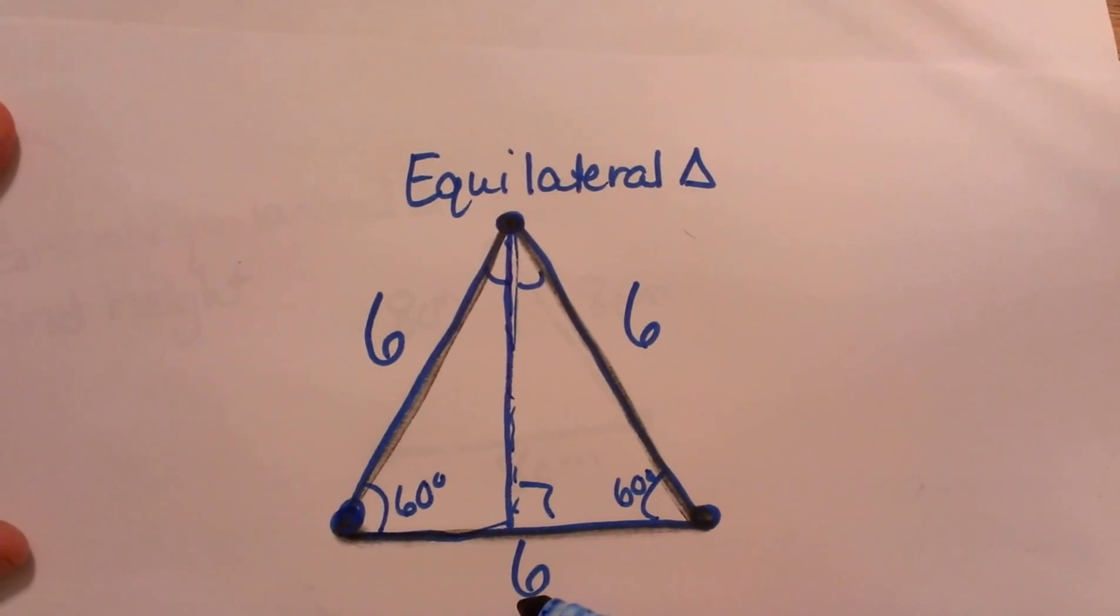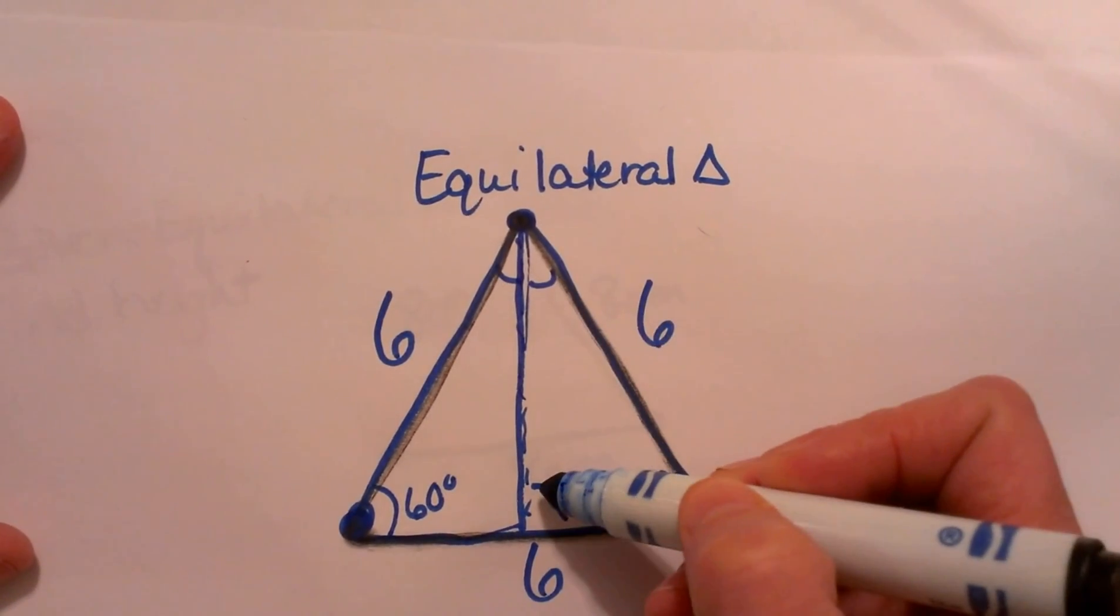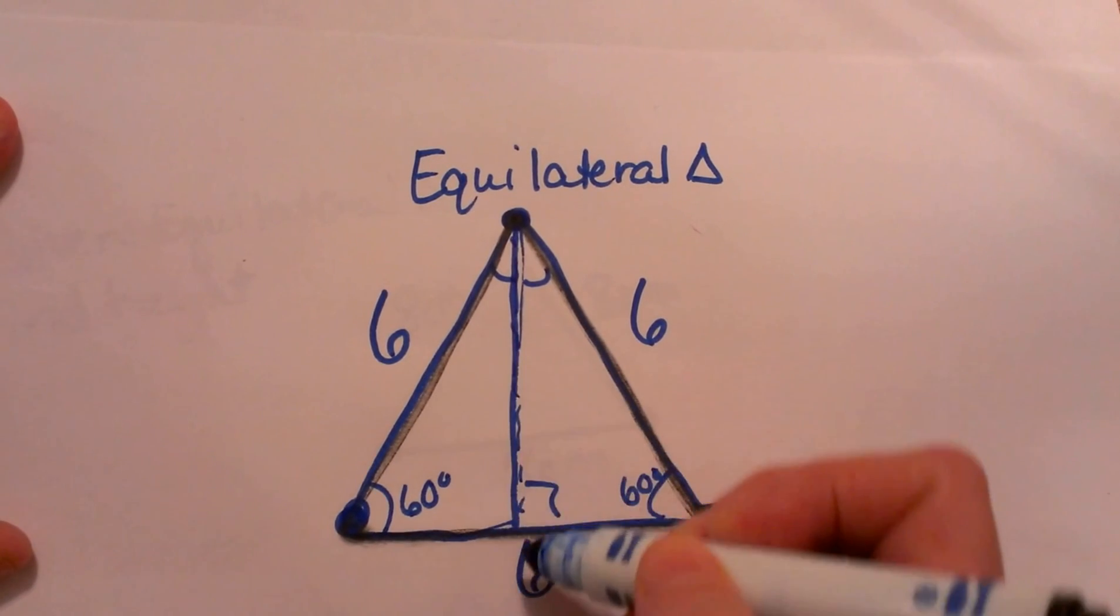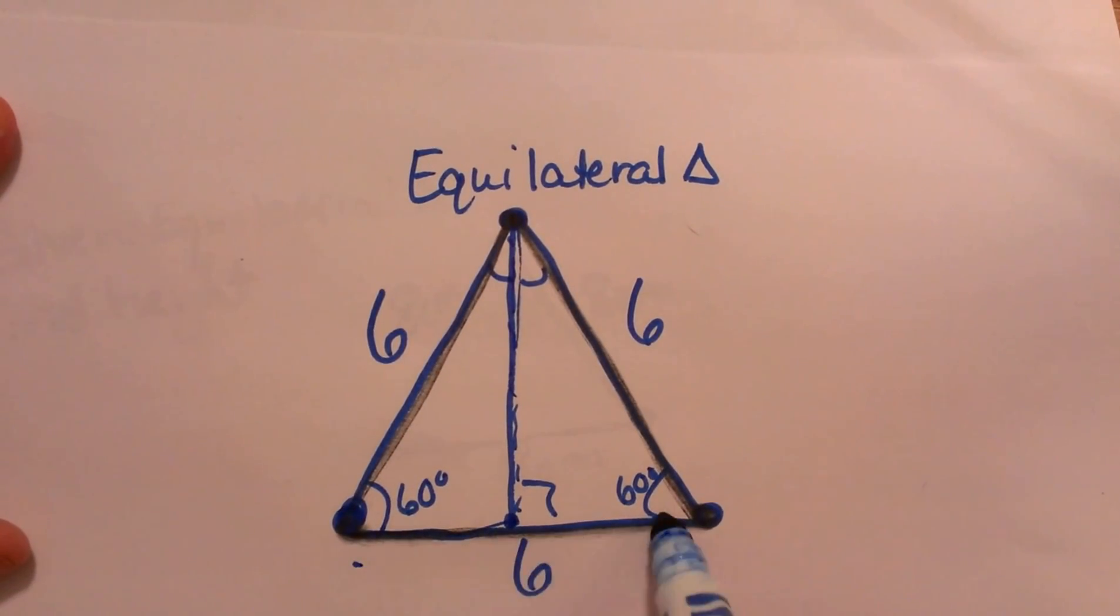So what I am going to do is I am going to use my 30-60-90 rules to find this height. Once I draw the altitude in, it takes this base and cuts it in half, so each side is 3.